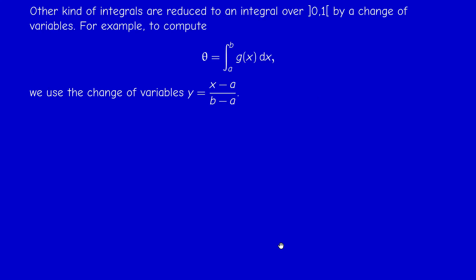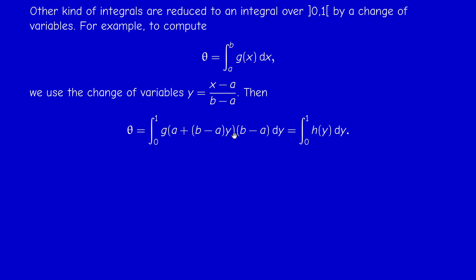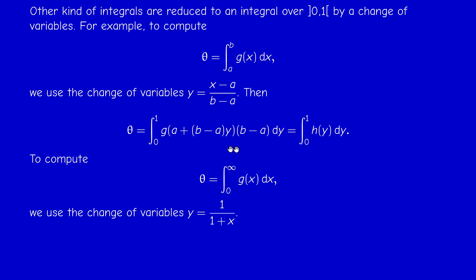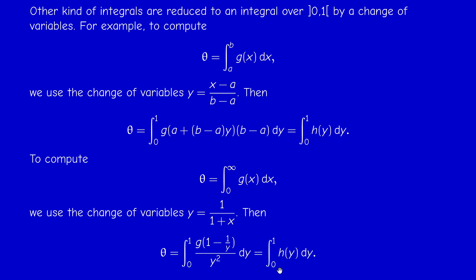If you want to compute other integrals, we can always reduce to the case of an integral over (0,1) by a change of variables. Suppose you want to approximate the integral from a to b — by a change of variables we can get back to an integral from 0 to 1. We can also approximate integrals over unbounded domains, like the integral from 0 to infinity of g(x): if we do the change of variables y = 1/(1+x), we get back to an integral from 0 to 1 of a summable function.